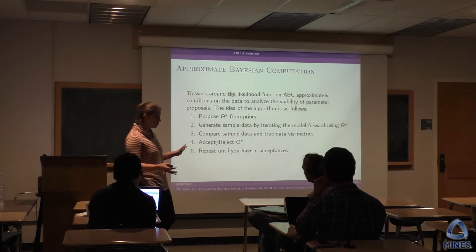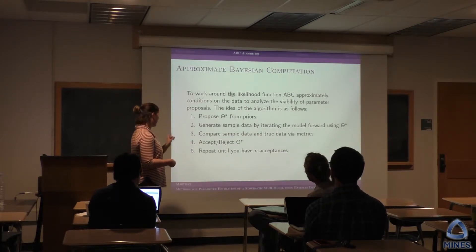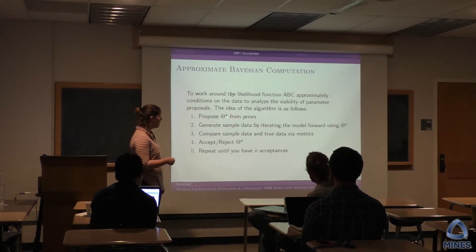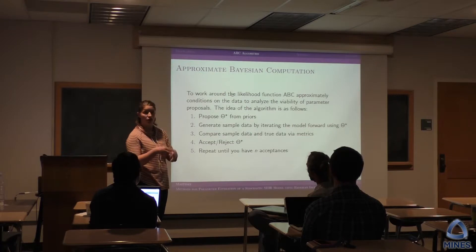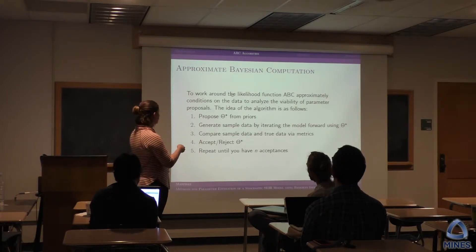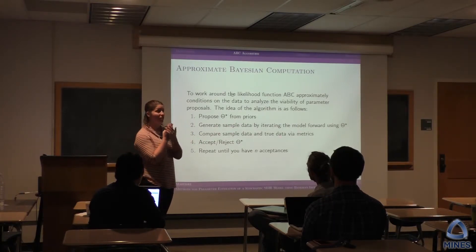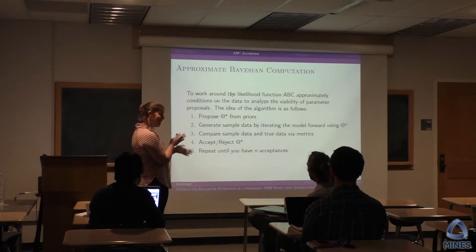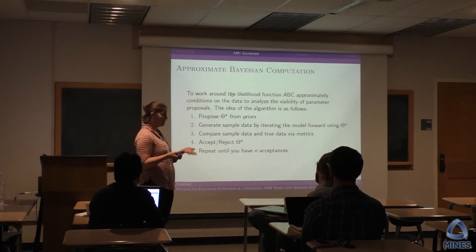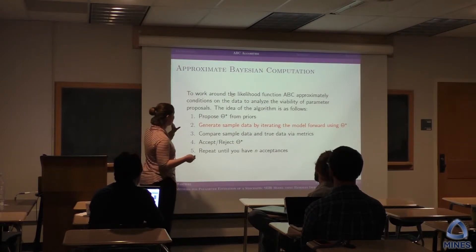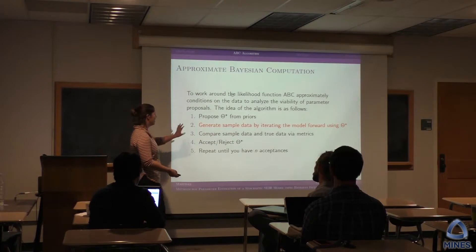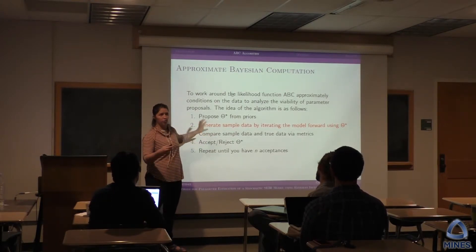ABC is the idea of approximating these distributions by doing five steps. You propose a set of theta-stars — your parameters — from some priors. You run a forward model to get a generated data set, which you then compare to the true data using some metric. If they're close enough, you accept that set of parameter values. You do that a bunch of times. The two main things that change from method to method are the forward model and the metrics you use.